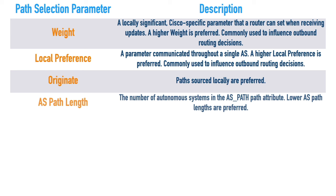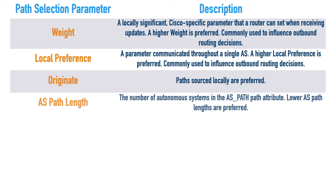But let's say we have two different ways of getting to a network with equal weight, equal local preference, and neither originated locally. What do we do? We look at the autonomous system path length - how many autonomous systems do we have to travel through to get to this destination network? This is a little bit like RIP's hop count. If everything else is equal, we go with the path that has the shortest number of autonomous systems to transit.